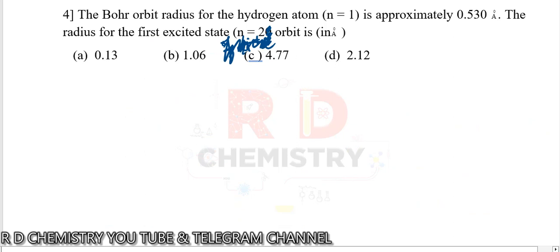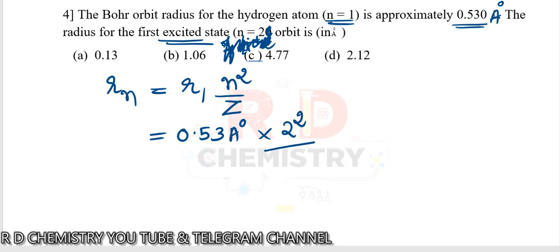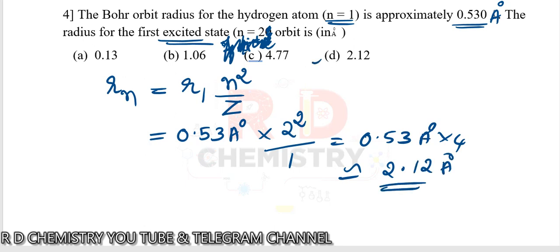Question number 4. The Bohr orbit for hydrogen at N=1 is approximately 0.53 angstroms. We need the radius of the first excited state, N=2, for hydrogen. The formula is R = R₁ × N²/Z. So R = 0.53 Å × (2²/1) = 0.53 × 4 = 2.12 angstroms. The answer is option number D.